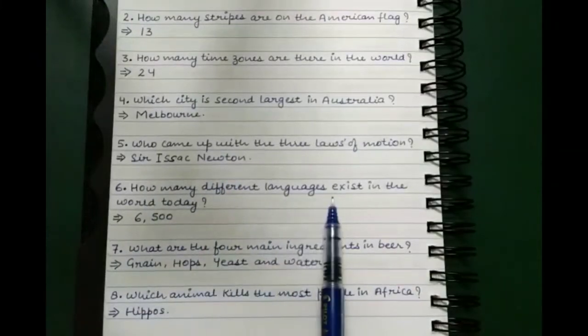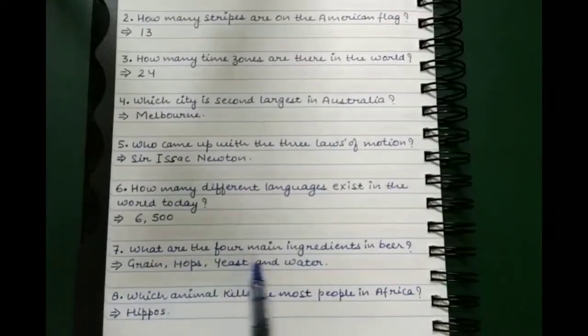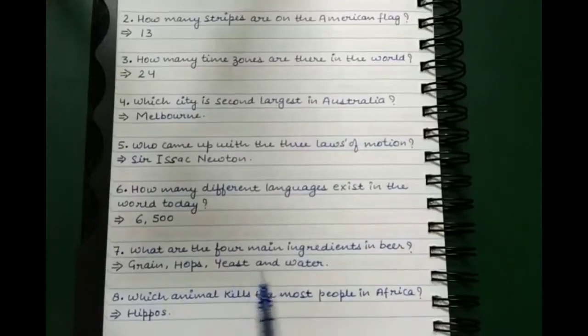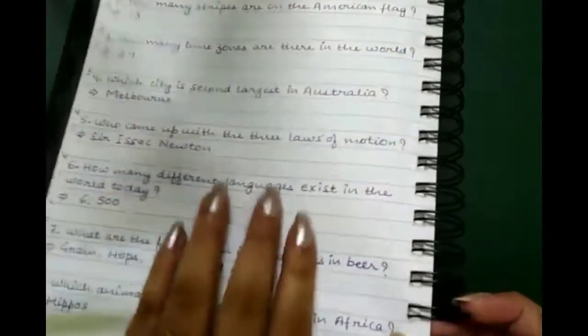How many different languages exist in the world today? 6,500. What are the four main ingredients in beer? Grain, hops, yeast, and water. Which animal kills the most people in Africa? Hippos.